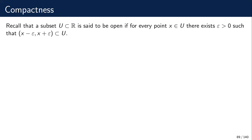Let us start by recalling the definition of open subsets of the real line. A set U, a subset of the real line, is said to be open if for every point in the set we can find a positive epsilon such that the interval with radius epsilon around x is contained in the set. Basically, for every point we can find an open interval around this point which will be contained in its entirety in the set U.